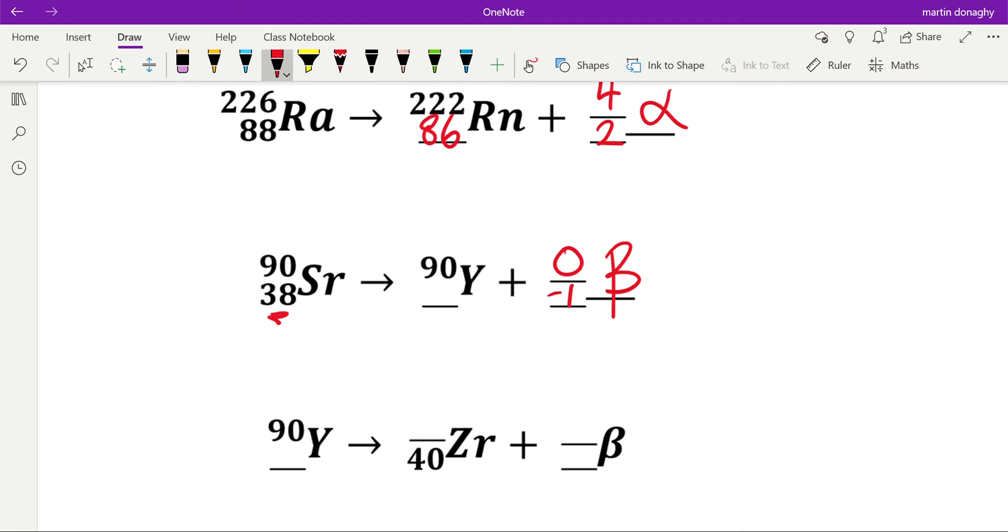And then be very careful, because the number of people that will put down 37 there in an exam is huge. 38 equals 39 minus 1. It's a common mistake with beta—if it's beta, make sure you take your time over it.